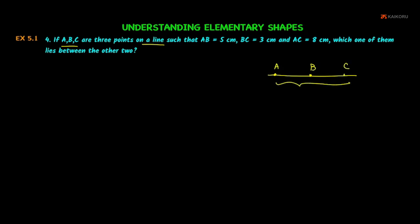AC is equal to 8 cm. AB is equal to 5 cm. So first option is here 5 cm. That's why AB is here 5 cm. If you get it, BC is 3 cm. So first option is BC is 3 cm. This is possible.